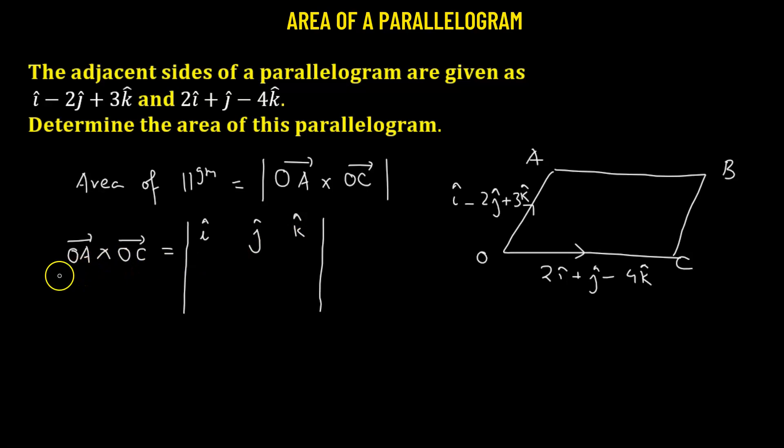Now, following the order of multiplication, in the second row we will have the components of OA vector. So OA vector will be 1, negative 2, positive 3. And in the third row, we have components of OC vector. So that will be 2, 1, negative 4. So let's expand this determinant along the first row.